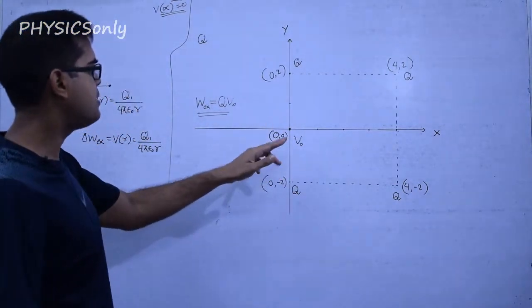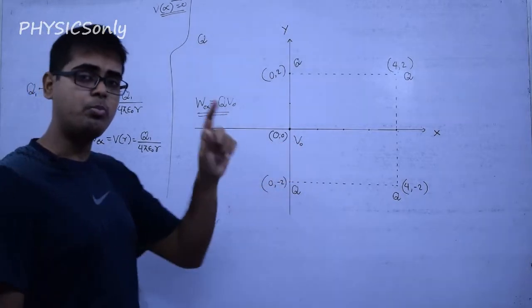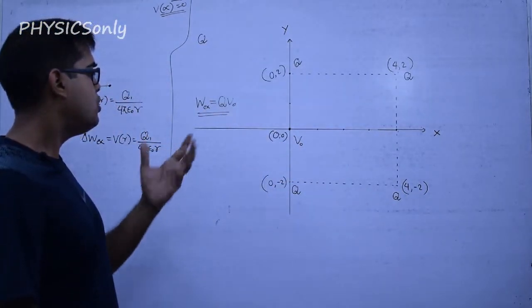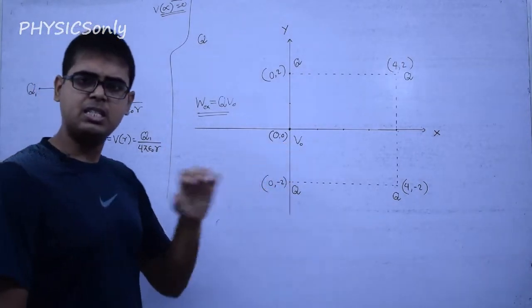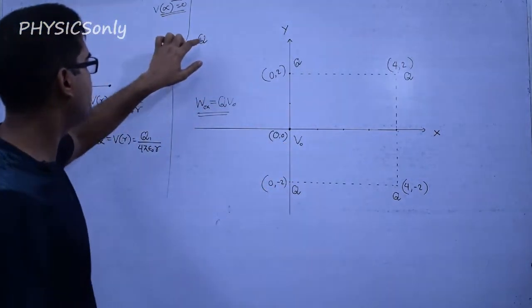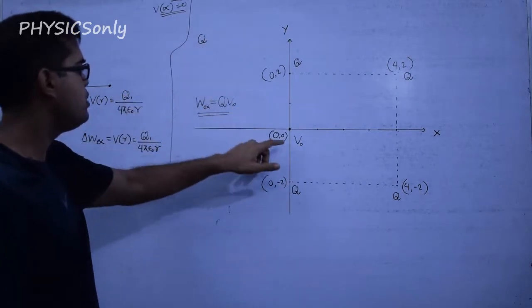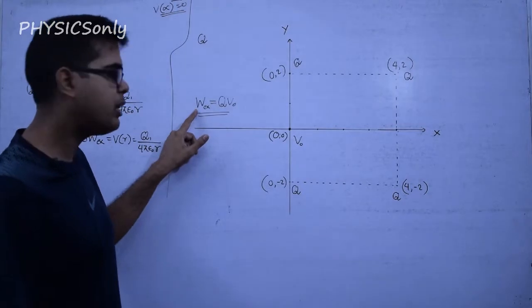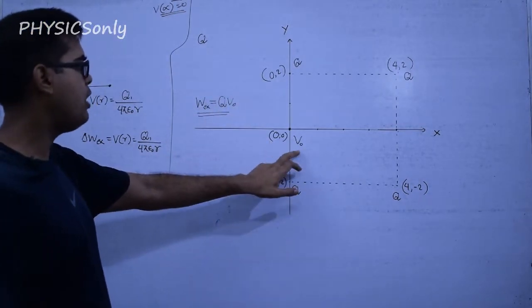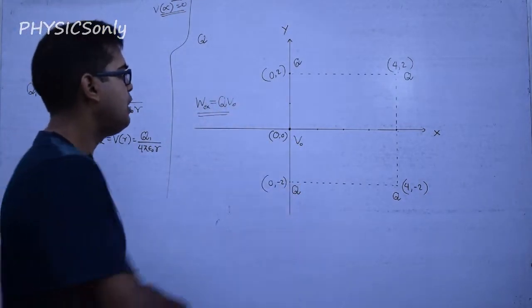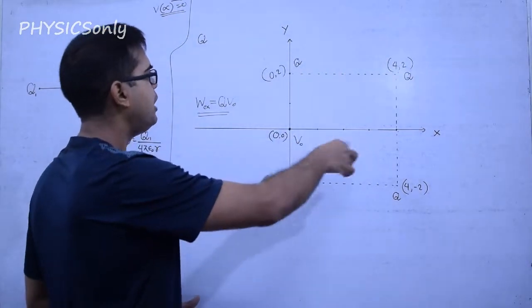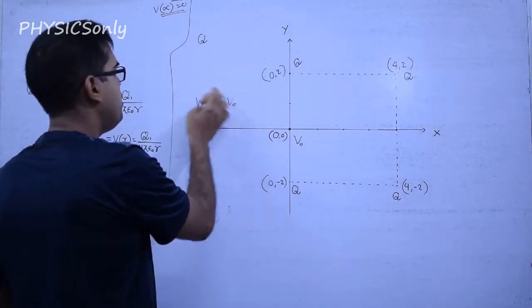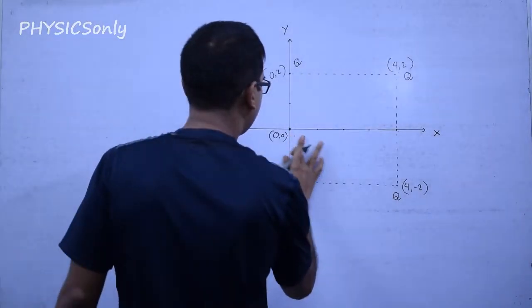So if the work done for a unit positive charge is V₀, then to bring charge Q from infinity to this point it will be Q × V₀. That will be our external work done. So first we calculate V₀ — the potential at the origin due to this charge distribution — and then simply multiply that potential by Q to get our answer.